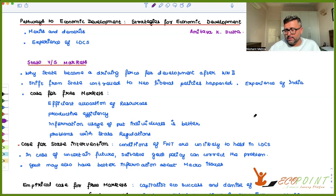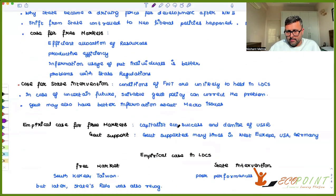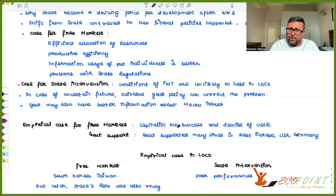But free market doesn't mean zero government intervention — there is government intervention even there. Those who argue for free markets base their argument on efficient allocation of resources, productive efficiency, and the idea that private individuals' information can be used better by free markets than under state control. There are also various problems with state regulations — it can lead to corruption, inefficiency, and sub-optimal solutions. Those who believe in free markets base their opinion on these arguments.